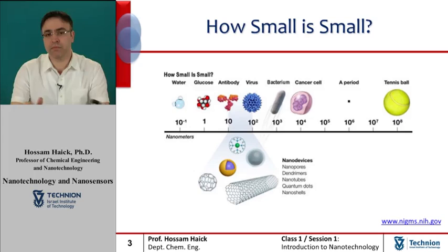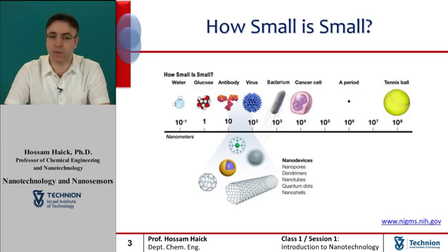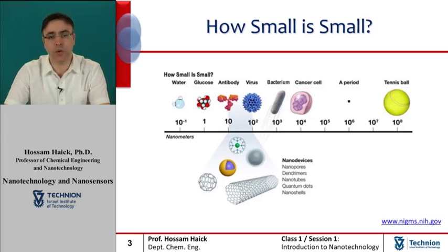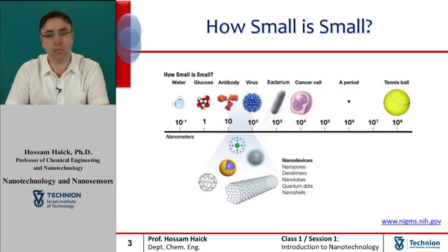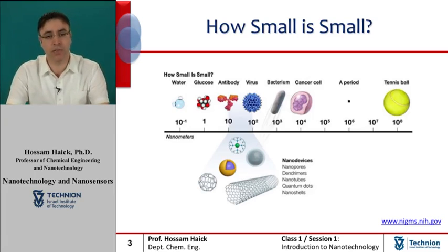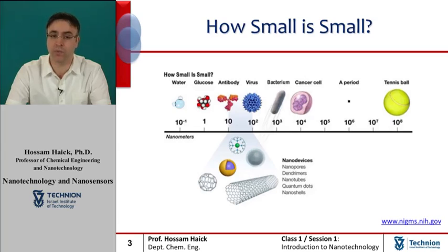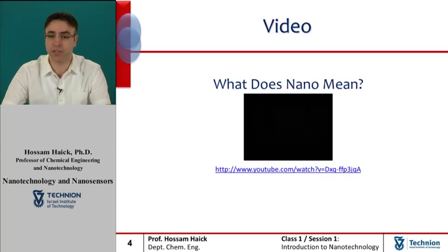Here are some daily-life objects measured in nanometers: one inch equals 25.4 million nanometers, a sheet of paper is about 100,000 nanometers thick, a human hair measures roughly 50,000 to 100,000 nanometers in diameter, and your fingernails grow one nanometer every second.